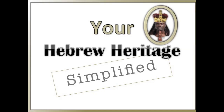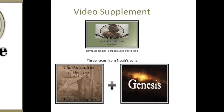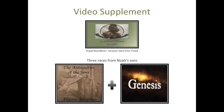This is Hebrew Heritage Simplified. This presentation is a supplement to a previous video, the title and link of which will be left in the description. That report used Flavius Josephus' Antiquities of the Jews, which provided the first known ethnicities to the groups that came from Noah's sons, listed in Genesis chapter 10.